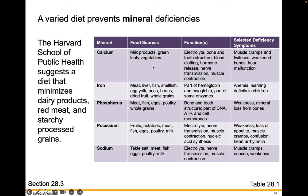The same goes for minerals. Minerals like calcium you can get from dairy products or leafy green vegetables. They're important for electrolyte balance, bone and tooth structure, blood clotting ability, hormone release, nerve transmission, and muscle contractions. Calcium is very important. A calcium deficiency would result in muscle cramps and twitches, weakened bones, and heart malfunction.